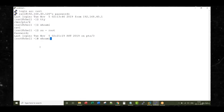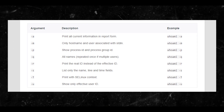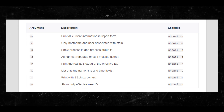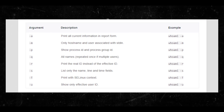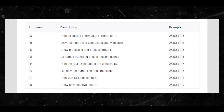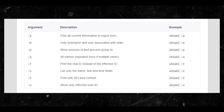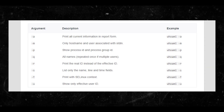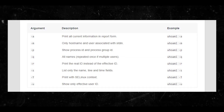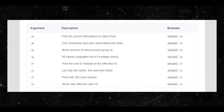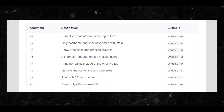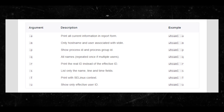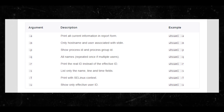You can print all current information in report form. You can use hostname and the user associated with stdin. You can show the process ID and group process ID. Please check the screen so everybody can see the capabilities of what you can do using this tool.